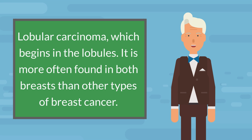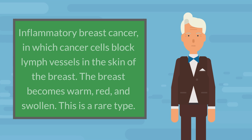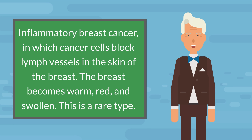Lobular carcinoma, which begins in the lobules. It is more often found in both breasts than other types of breast cancer. Inflammatory breast cancer, in which cancer cells block lymph vessels in the skin of the breast. The breast becomes warm, red, and swollen. This is a rare type.